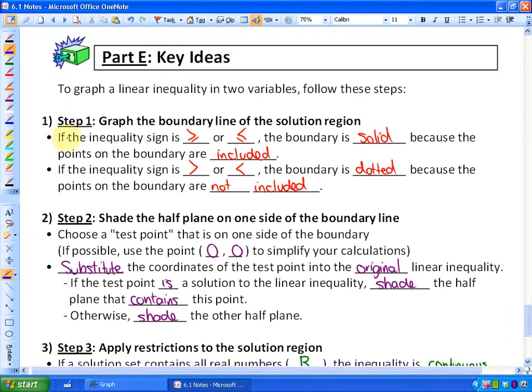So graph your boundary line with these two stipulations. One stipulation being, if the inequality sign is greater than or equal to or less than or equal to, the boundary is solid because the points on the boundary are included. And vice versa, if the inequality sign is just greater than or less than, the boundary is dotted because the points on the boundary line are not included.